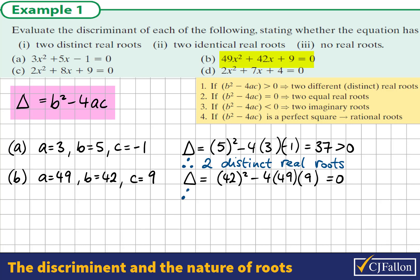Therefore, in the quadratic formula, we would be getting plus and minus 0 underneath the square root sign, so we only get one answer in the quadratic. Or we could say we have two identical roots, or we could call it one real root.